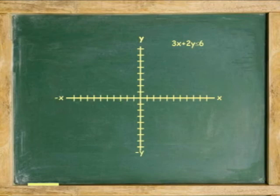One more example: graph the inequality 3x plus 2y is less than or equal to 6. Because the inequality is not in slope-intercept form, we first turn it into slope-intercept form by solving for y.